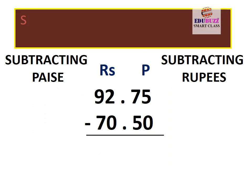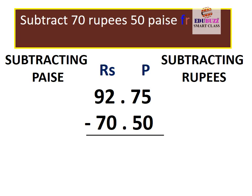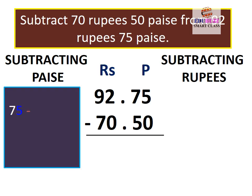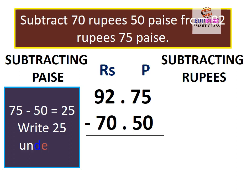Subtract 70 rupees 50 paise from 92 rupees 75 paise. Subtracting paise: 75 minus 50 is equal to 25. Write 25 under P.